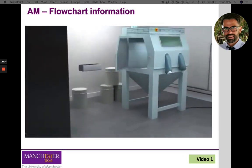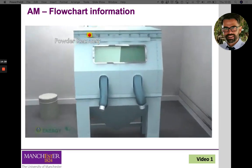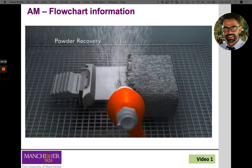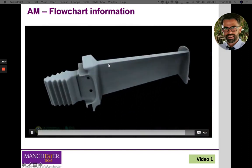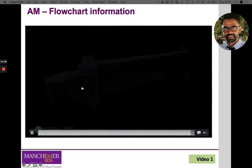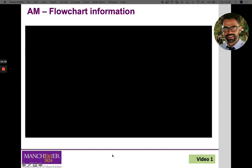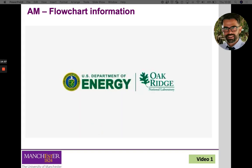The process does not end there — some post-treatment needs to be done. The loose powder not used to build the final part can then be recovered, recycled, and reused again. As you can see, this kind of approach using additive manufacturing allows us to have much more sustainable products because we can recover and recycle most of the materials not used in the manufacturing process.